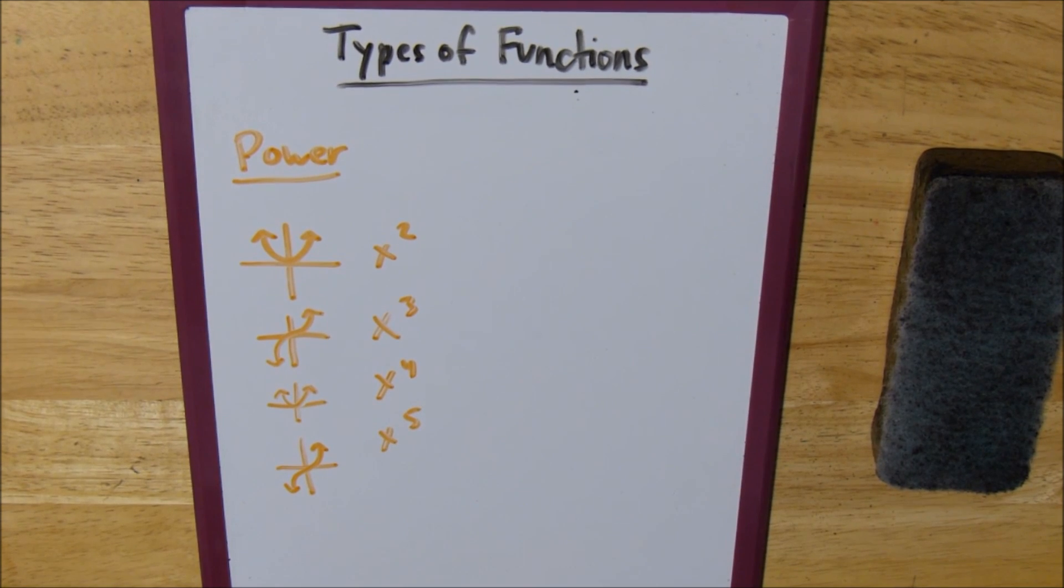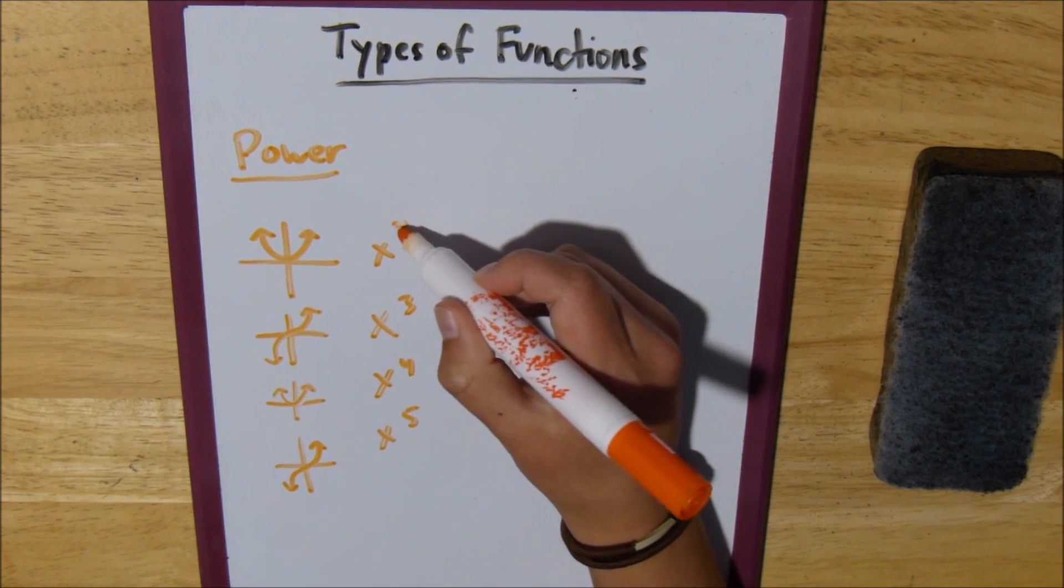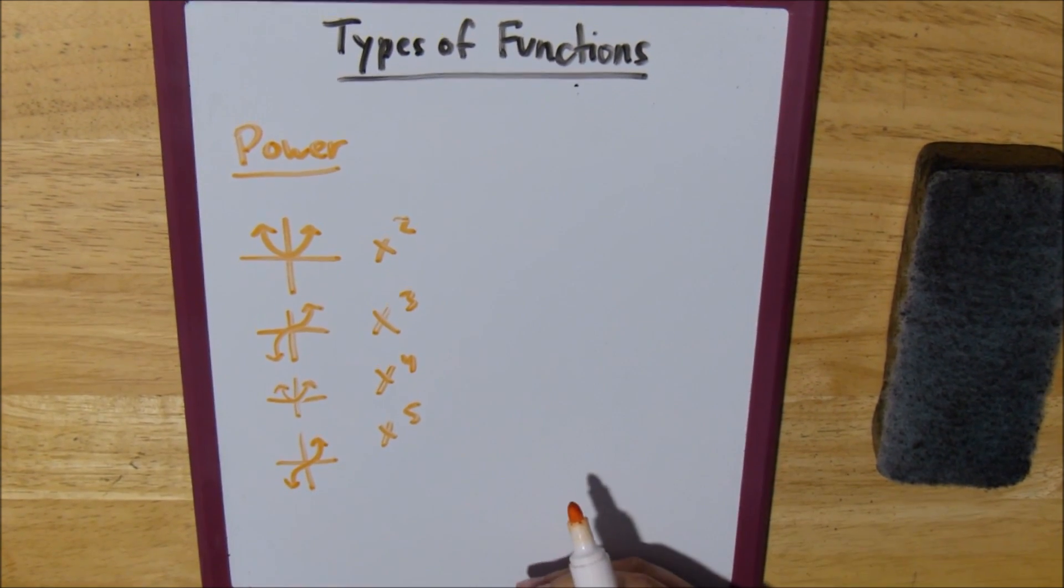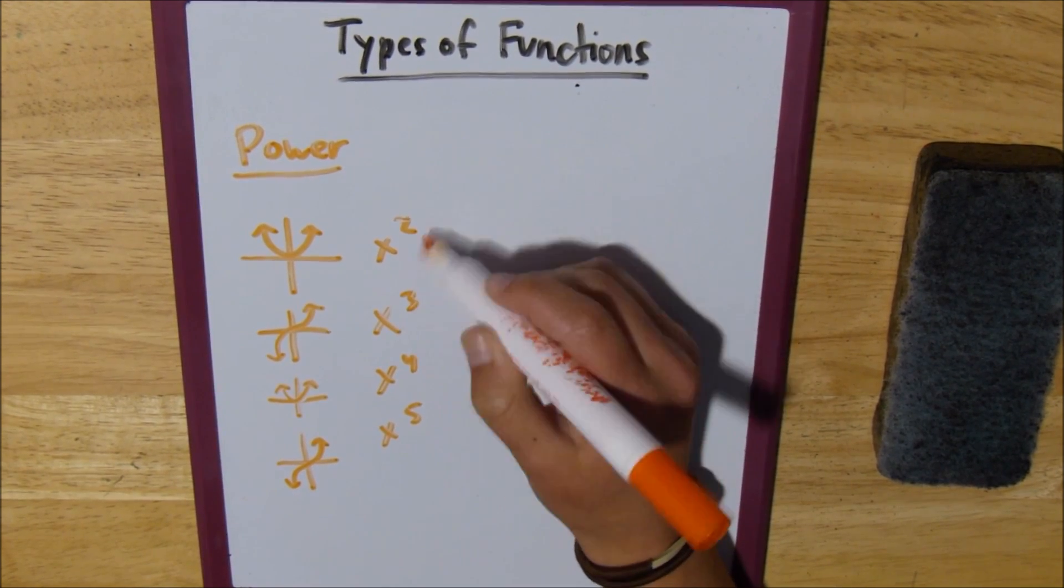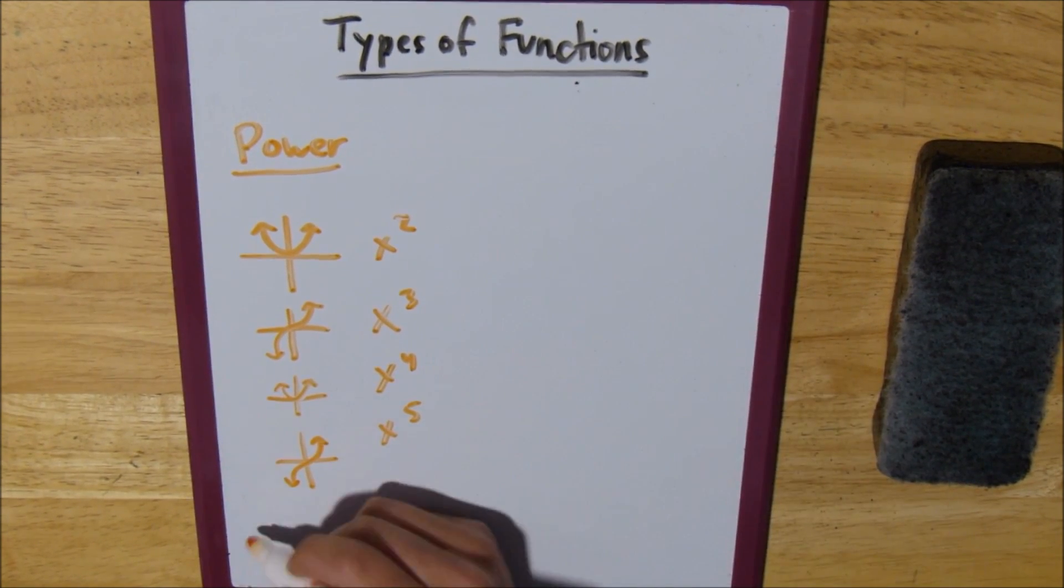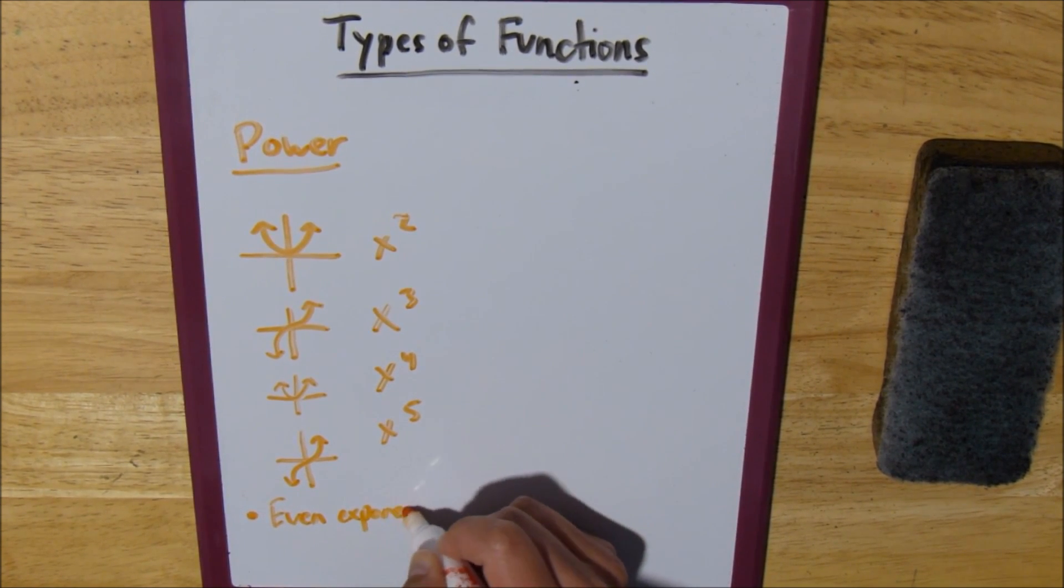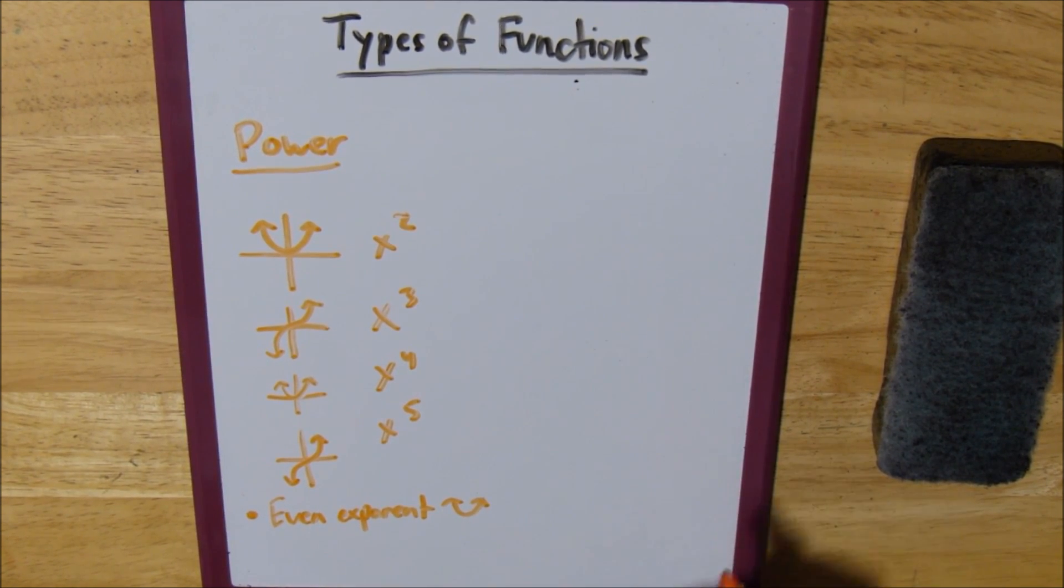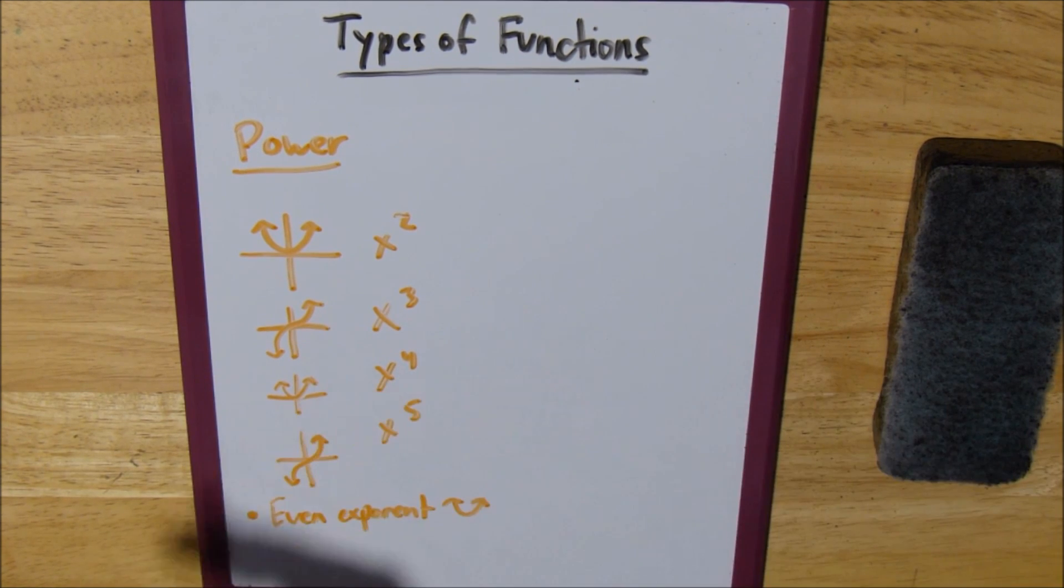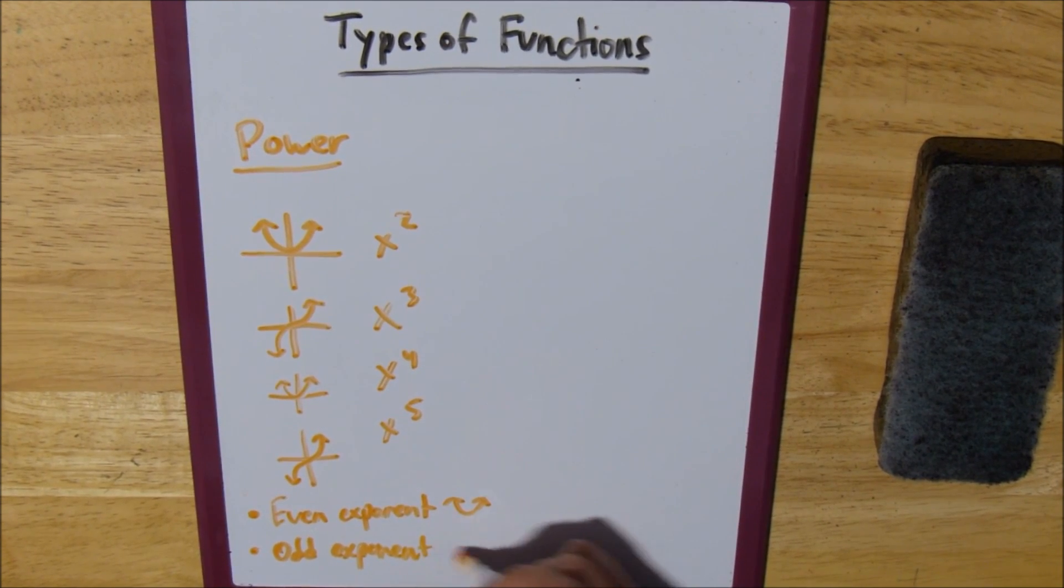So to figure out if something is a power function, we typically look at what the exponent is. So if we have an even exponent, it's going to look something like a u. It can be upside down, it can be moved to the right or to the left, but it's typically going to look like a u. If it's an odd exponent, it's typically going to look like that little squiggly.